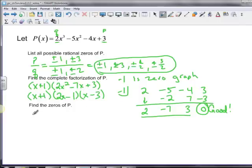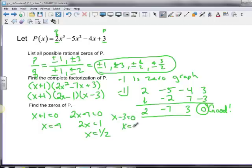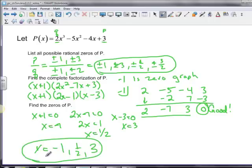Now to find the zeros, all we need to do is set each factor equal to 0 and solve. So I get x equals negative 1. Then we say 2x minus 1 equals 0, and 2x equals 1, and x equals 1 half, and then x minus 3 equals 0. So x equals 3. So my zeros are then x equals negative 1, 1 half, and 3. And that's my zeros.